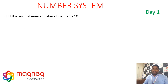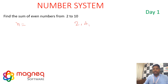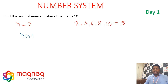Sum of even numbers from 2 to 10. How many even numbers? 2, 4, 6, 8, 10 — only 5 even numbers, so n = 5. Formula: n(n+1) = 5 × 6 = 30. The sum of even numbers from 2 to 10 is 30.